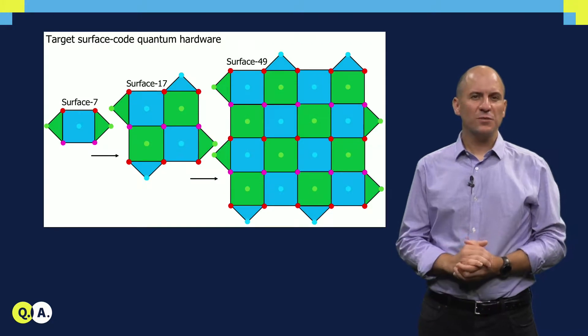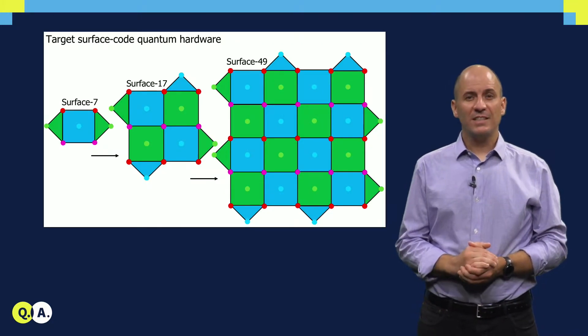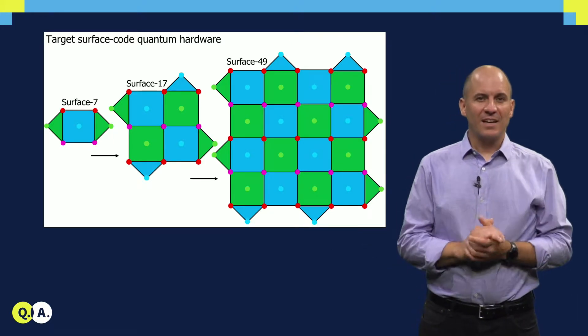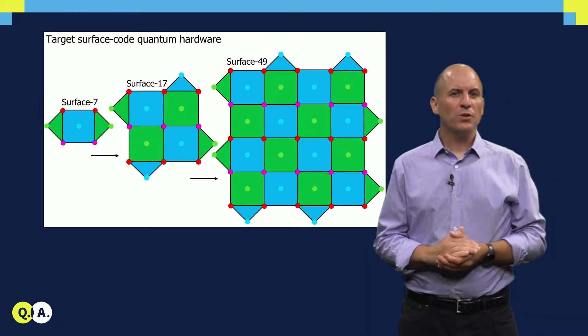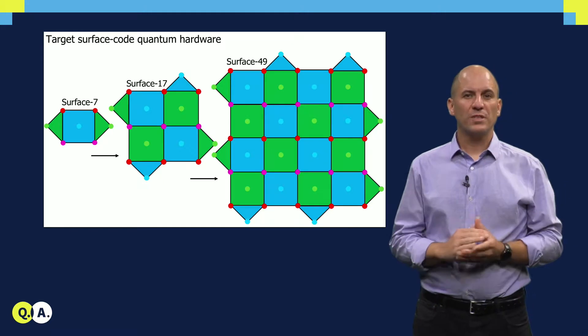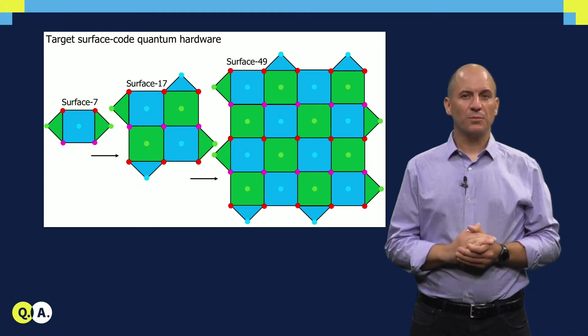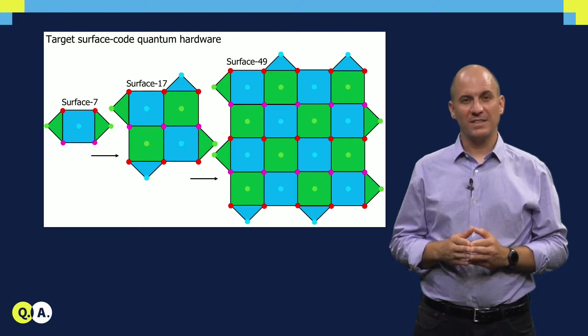Currently, we are testing surface code chips with 7, 17, and 49 qubits. We call these surface 7, 17, and 49. We assemble all of these using a common approach that we believe scales to larger surfaces. I will now describe this approach using the specific example of surface 17.